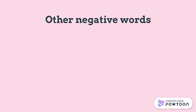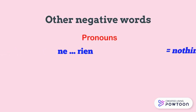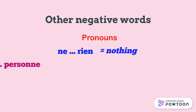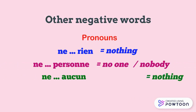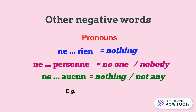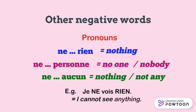Some other negative words are pronouns: ne rien (nothing), ne personne (no one / nobody), ne aucun (nothing / not any). For instance, je ne vois rien — I cannot see anything.